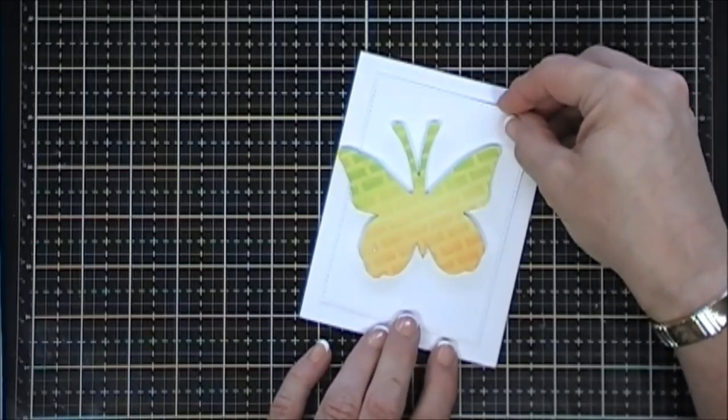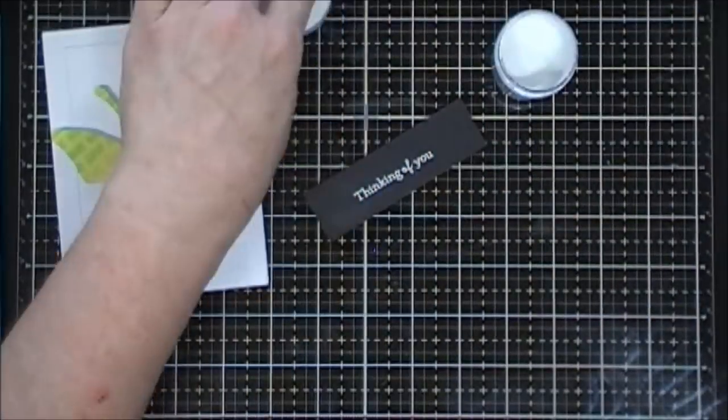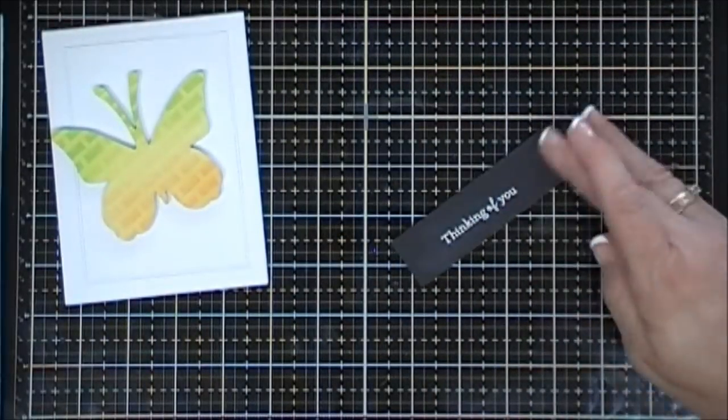I'm just going to tape this down to the center of my card base. Now this is a card base that I grabbed from my stash. It's four and a quarter by five and a half inch top folding. Like I said earlier, I wanted to save my second kit for another card.